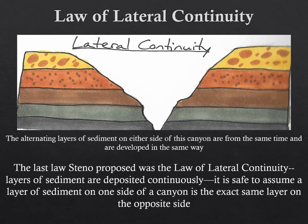The law of lateral continuity states that layers of sediment are deposited in a continuous way. When layers are deposited — whether shale, silt, or sand — those layers are deposited continuously and could potentially extend forever on a flat surface. Over time, as those sediments solidify into sedimentary rocks and are uplifted, erosion can take place. Despite erosion, as in a canyon, it's safe to assume that a layer of sediment on one side of the canyon is the same as a layer on the opposite side. You can see the layers of sandstone are exactly the same on opposite sides — that's the law of lateral continuity.